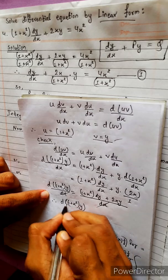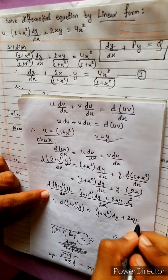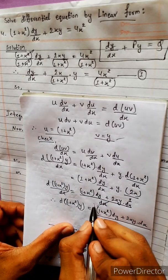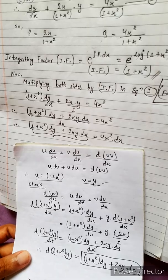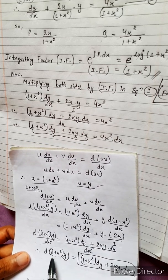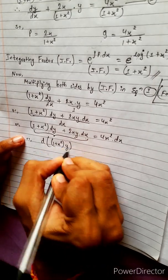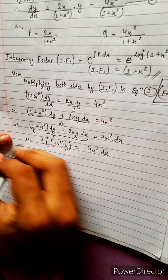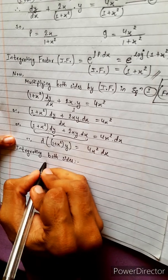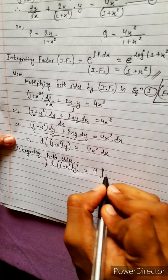Therefore, (1 plus x squared) into y equals the product form. We verify: d of (1 plus x squared) times y equals (1 plus x squared) dy plus 2xy dx. So the left side equals d[(1 plus x squared) y], and integrating both sides gives: integration of d[(1 plus x squared) y] equals integration of 4x squared dx.